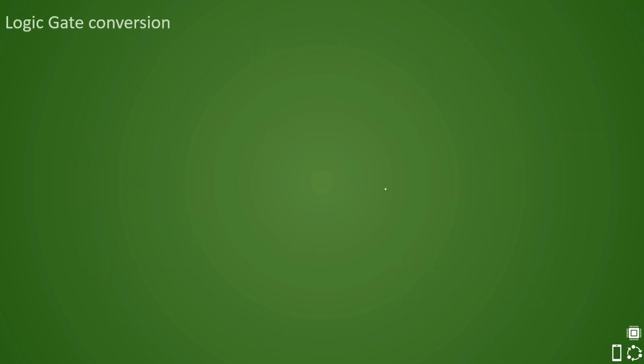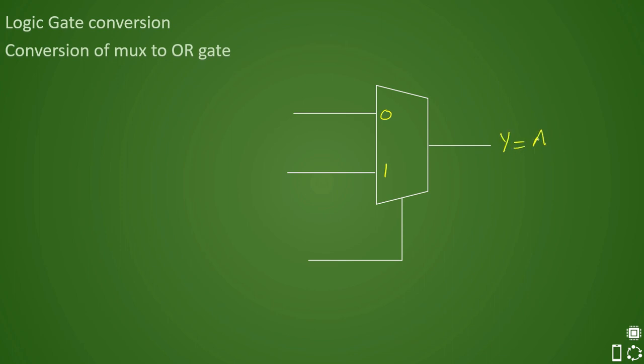Similarly, one can also ask about conversion of MUX to OR gate. Let us assume that we have a two input MUX. Let us say that this could be a complemented input and this is one. So zero and one. And now we expect that if there are two inputs A and B, the output should be A plus B.